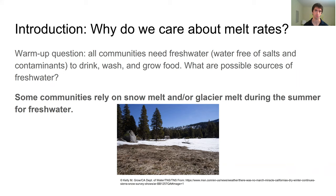Very briefly, I'll also mention that the rate of snow and ice melt is important for other things beyond just fresh water. In this lesson we'll focus on fresh water, but the rate of snowmelt and ice melt is really a critical climate variable as well. It's something that scientists like me work on understanding so that we can do a better job of predicting future climate.